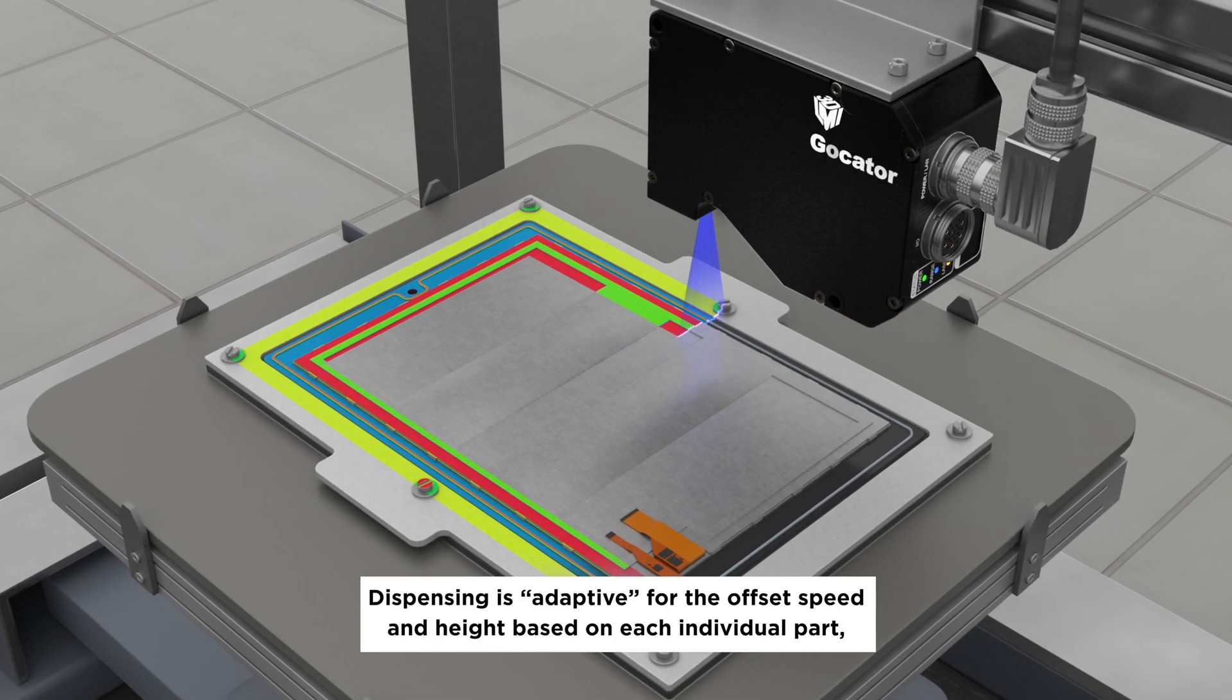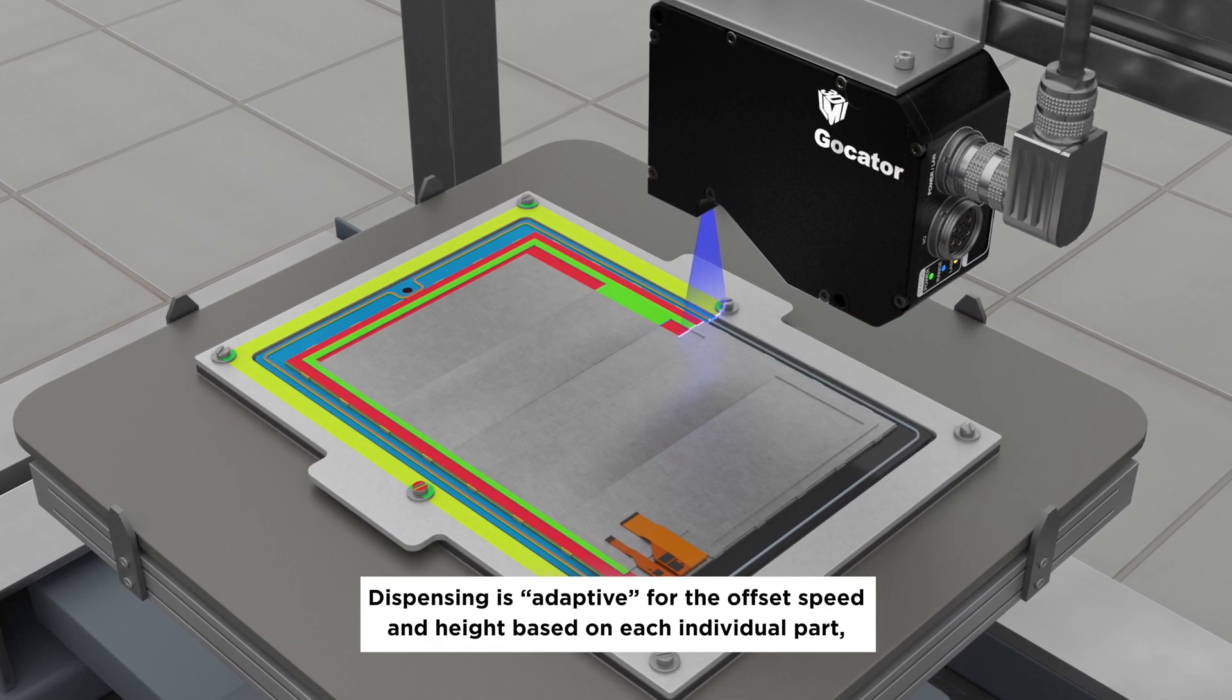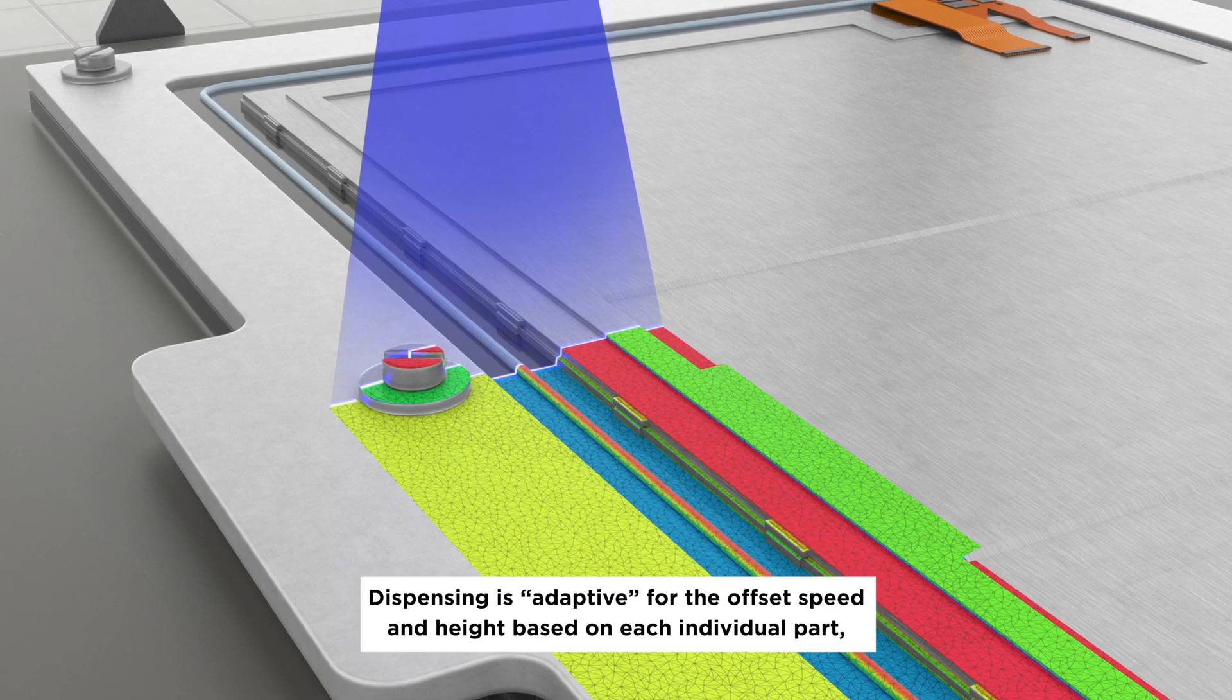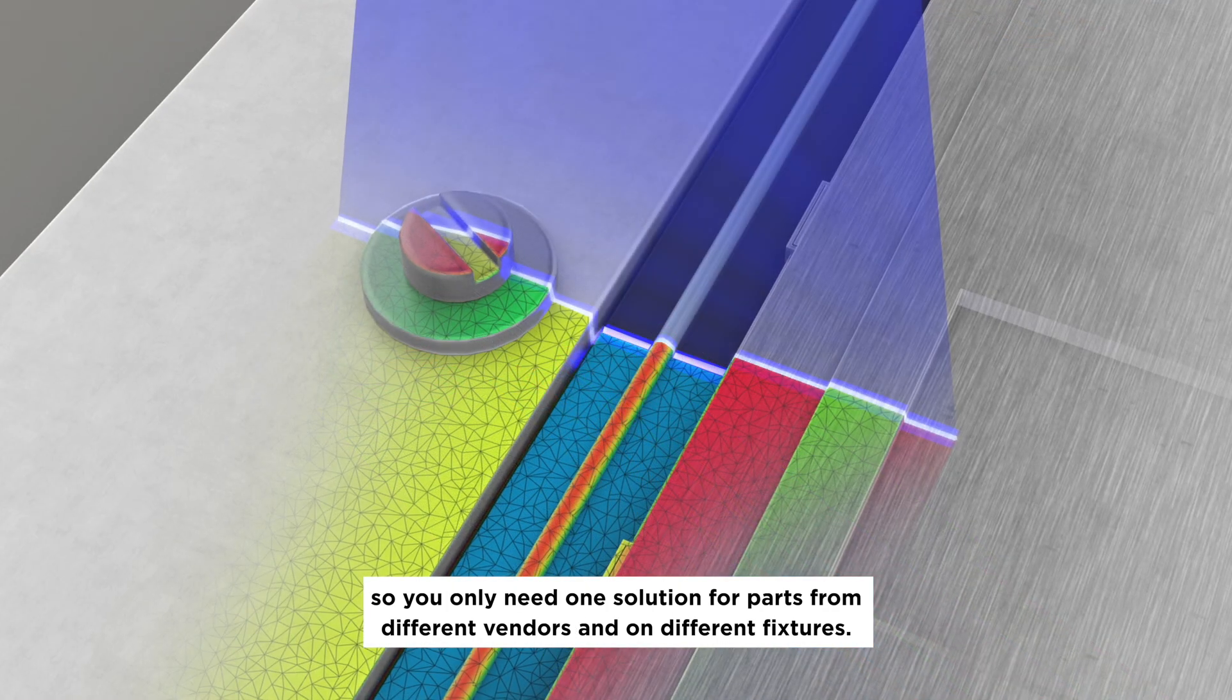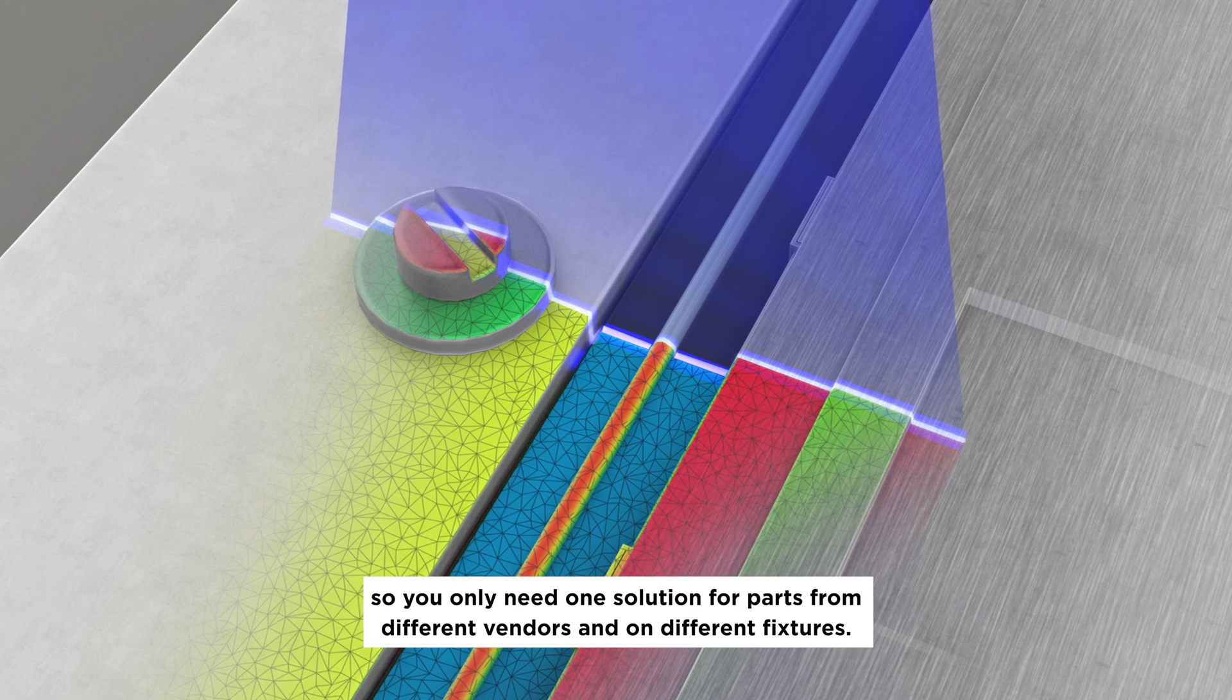Dispensing is adaptive for the offset speed and height based on each individual part, so you only need one solution for parts from different vendors and on different fixtures.